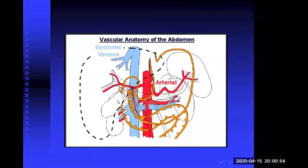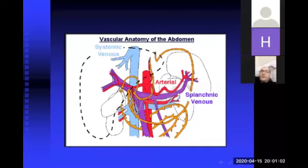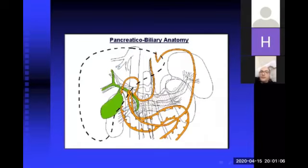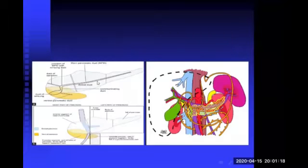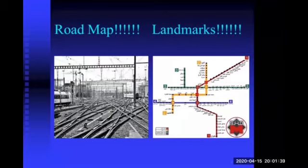The portal venous circulation includes the portal vein, superior mesenteric vein, and splenic vein. The biliary system includes the common bile duct and gallbladder. The pancreas with its different parts: the uncinate process, head, neck, body, and tail. These structures are criss-crossing each other, so there should be a roadmap for EUS examination with different stations and landmarks for each station.